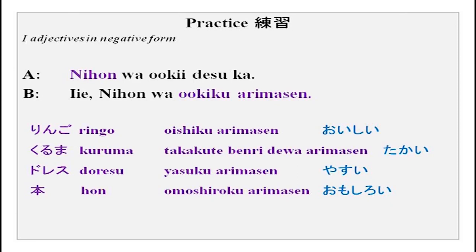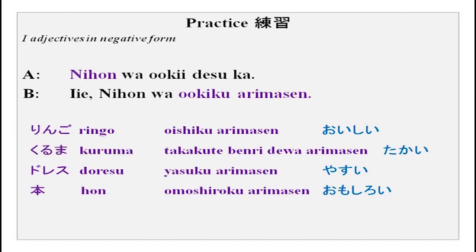Here it is a little different. Kuruma wa takai desu ka? You want to say it is takai or it is not as convenient as you thought. Kuruma wa takakute — this form you have done — takakute benri dewa arimasen. This is how you make the negative for i-adjectives in combined sentences.